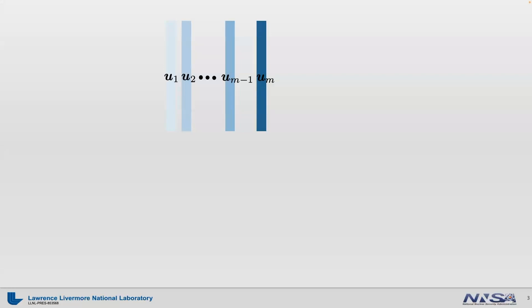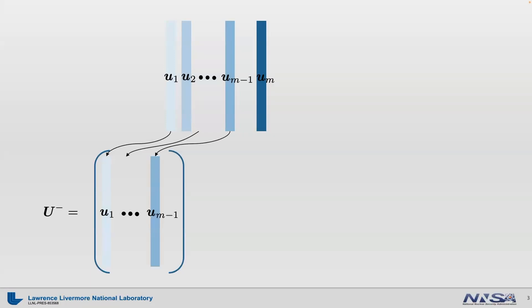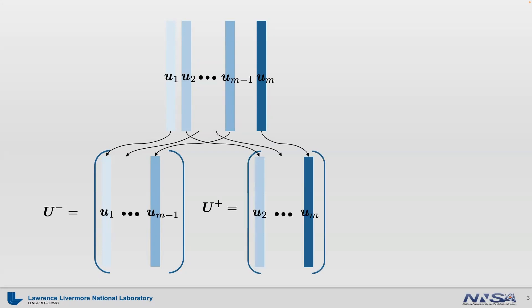DMD constructs two matrices out of these vectors. The first is the U-minus matrix, which holds the first through the second-to-last time step image vectors column-wise. The second is the U-plus matrix, which holds the second through the last time step image vectors column-wise. DMD then tries to find a linear operator A that maps U-minus to U-plus — effectively a linear map updating one time step image to the next. DMD assumes that whatever dynamics we have can be modeled with a linear update.